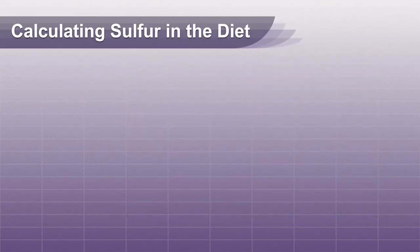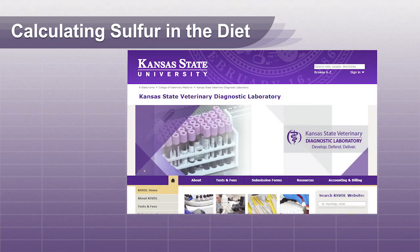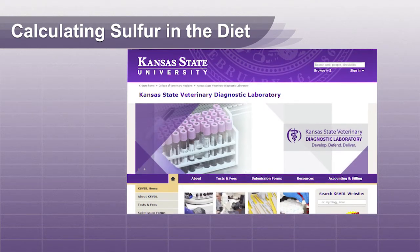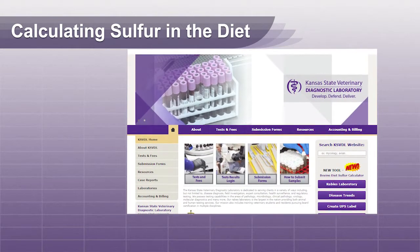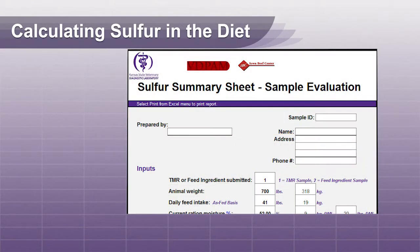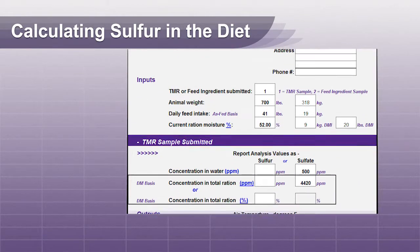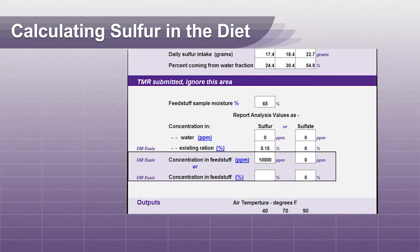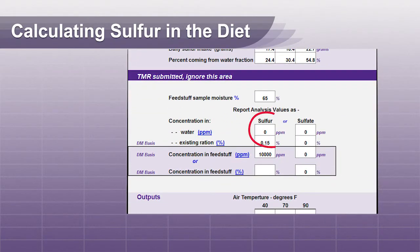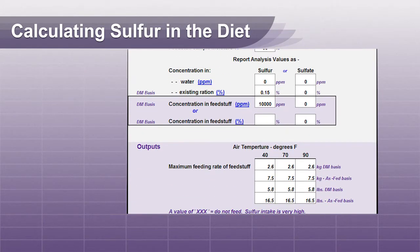When calculating sulfur in the diet on a dry matter basis, the KSVDL webpage has a handy calculator for estimating sulfur intake. Always remember to add the water source sulfur in your calculations, and also remember that water intake will vary with the ambient temperature.